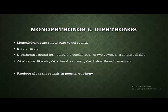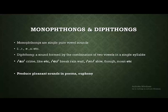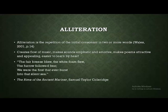Monophthongs and diphthongs are used by poets to produce pleasant sounds in poems. As we have seen, when these sounds are combined with soft consonants, they produce euphony — pleasant, musical sounds in poems. This euphony is used by poets and writers to talk about pleasant, kind, and positive experiences.